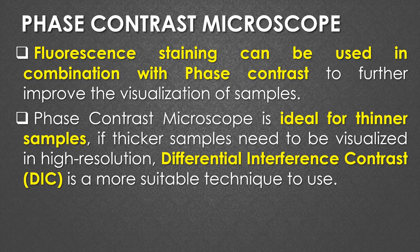The phase contrast microscope is only ideal for thinner samples. If you have thicker samples, they need to be visualized under a higher resolution modified version of the phase contrast microscope, that is the Differential Interference Contrast or DIC microscope. So for thin samples we use phase contrast microscope, and if the specimen is very thick, the recommended microscope is the DIC or Differential Interference Contrast microscope.